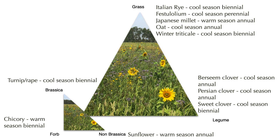Looking at the triangles for scenario two, you can see we've added more diversity to this system. The festulolium is a cool-season perennial, and winter triticale is another cool-season biennial. Under the legumes, sweet clover gives us a cool-season biennial. Over in the forbs, chicory is a warm-season biennial. So we've added that extra kick of diversity to this blend.